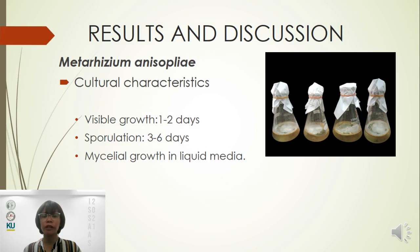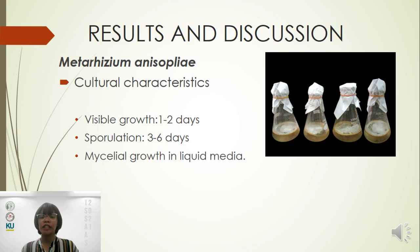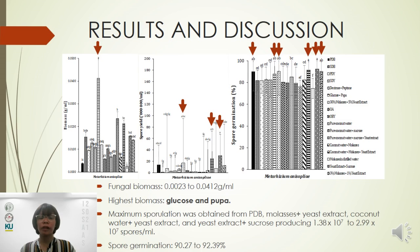For Metaricium Anisoplyae, visible growth was observed 1 to 2 days and spore production 3 to 6 days after inoculation. We observed differences in thickness, degree of spore production, and color change, such as a yellow tinge on mycelia after spore production. Collected biomass ranged from 0.023 to 0.412 grams per ml, and highest biomass was obtained from glucose and pupa. High spore yield was obtained from potato dextrose broth, combination of molasses with yeast extract, combination of coconut water with yeast extract, and combination of yeast extract with sucrose, which produced 1.38 × 10⁷ to 2.99 × 10⁷ spores per ml. Spore germination ranged from 90.27% to 92.39%. Carbon source induced spore production, and nitrogen source induced micellar growth.